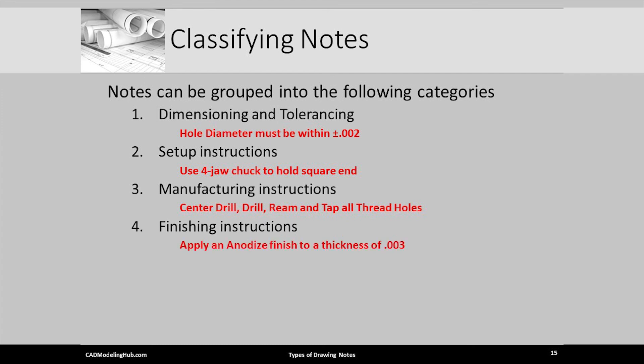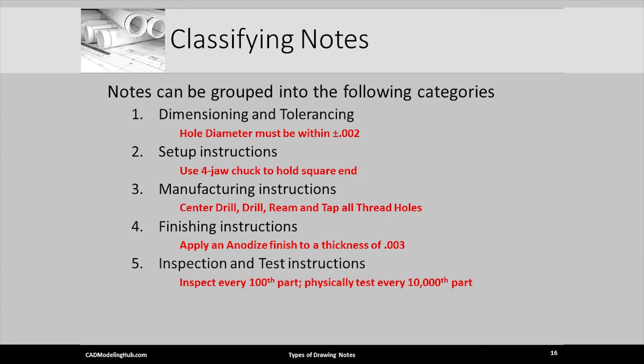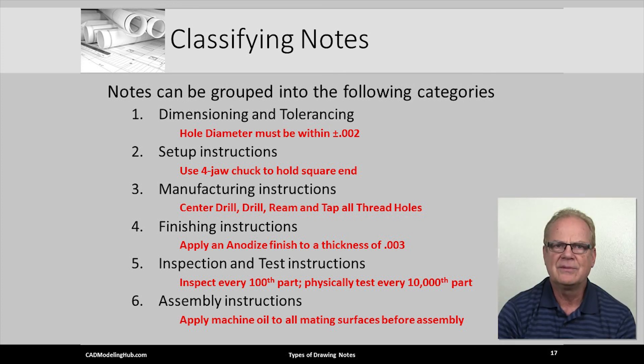Fourth, notes can be classified as finish or finishing instructions. These can deal with such things as application of painting, coating, polishing, etc. The fifth category contains notes that are related to how to set up or carry out inspection or testing. Occasionally, notes are placed on assembly drawings and provide instructions on how to assemble parts into a component or subassembly.